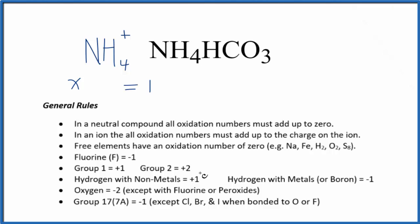But hydrogen, when it's bonded to nonmetals, and nitrogen is a nonmetal, is plus 1. So we have plus 1, and we have 4 hydrogen atoms. Multiply by 4. So X plus 4 equals 1.